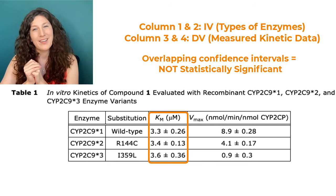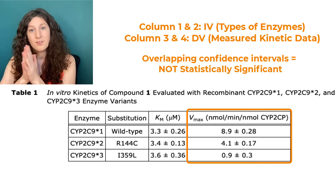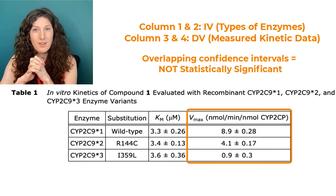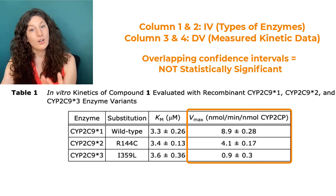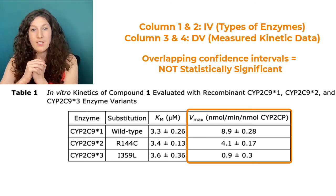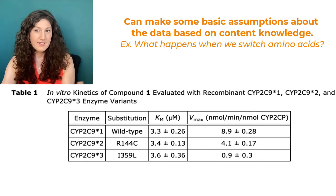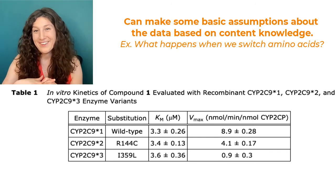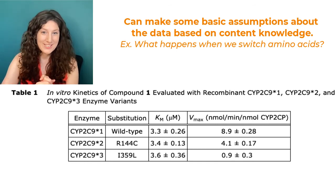Conversely, looking at Vmax — in nanomoles per minute per nanomole — there is a clear difference. The wild type is significantly larger than either of the two other enzymes, and they follow a decreasing trend down the column. We can't make any more comments than that based on the statistics alone, but in combination with what we know about the types of substitution and what's referenced in the passage, we can make some assumptions about this data that allow us to answer questions.